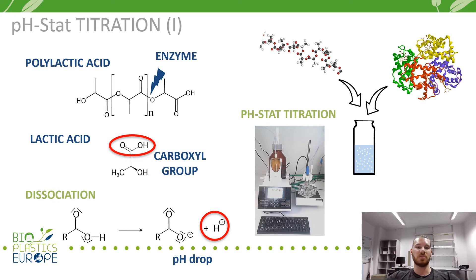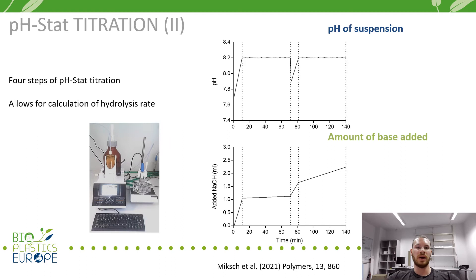This principle is used in pH-stat titration, which we apply to measure the degradability of synthetic polymers. The measurement of enzymatic degradation of polymers is a four-step procedure. During phase 1, the automatic titration system adjusts the pH of the suspension to the starting point of 8.2.